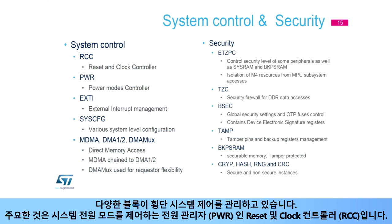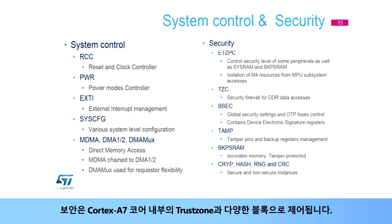Various blocks manage the transversal system control. The major ones are the Reset and Clock Controller (RCC), the power management (PWR) which controls system power modes, and security, which is controlled by TrustZone inside the Cortex-A7 core, as well as various other blocks.